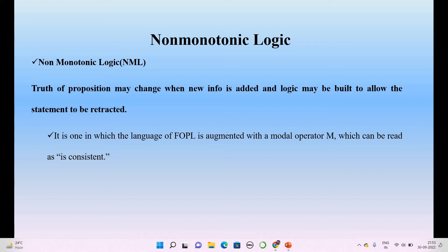It is one language in which first-order logic is augmented with the modal operator, which can be read as inconsistent. This is also called uncertainty. In my past video I talked about uncertainty — what is its meaning, what are its properties. Incomplete and inconsistent — these two are also properties of uncertainty. So obviously non-monotonic logic comes under this uncertainty. Whenever the logic is uncertain and we cannot directly tell the truth validity of that particular statement as either true or false, it is called non-monotonic logic.